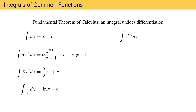The integral of e raised to the power alpha times x, where alpha is some constant, is 1 over that constant times the original function plus the constant of integration. Note that alpha can be any number, including negative 1, which means this allows you to evaluate the integral of e to the minus x. The integral of the natural log of a constant alpha times x times dx is x times the natural log of alpha times x minus x plus the constant of integration.